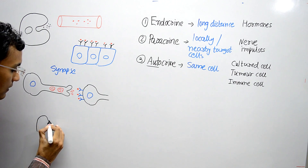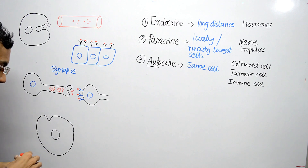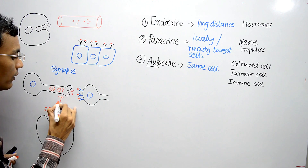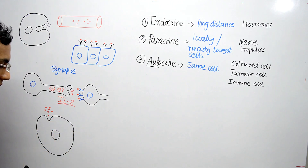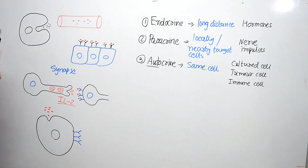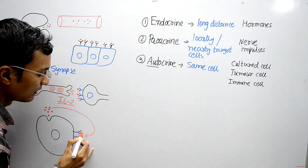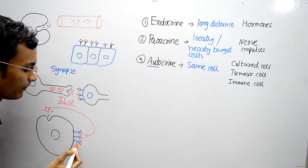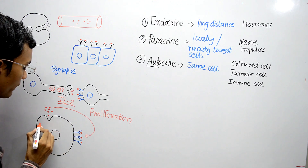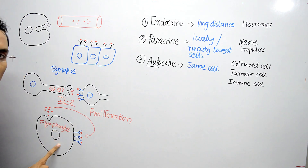Let's see the diagram of autocrine signaling using an immune cell. This is a T-lymphocyte, and it releases signaling molecules called interleukin-2. This T-lymphocyte also has receptors for interleukin-2, so the interleukin-2 molecules act on the same cell, binding to those receptors and triggering the proliferation of the T-lymphocyte. This is autocrine signaling.